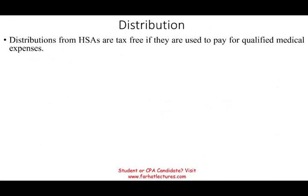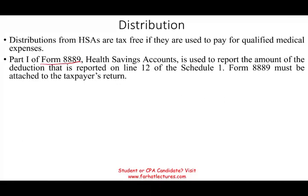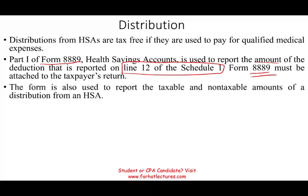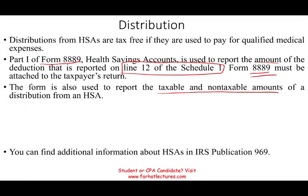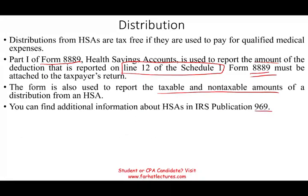Distributions from an HSA, as long as they are for qualified medical expenses, are tax-free. You have to fill out Form 8889, which has Part 1 and Part 2. It's used to report the amount of the deduction reported on Line 12 on Schedule 1 — as shown at the beginning — and that form must be attached to your tax return. This form is also used to report your taxable and non-taxable amounts from distributions. For more information, refer to IRS Publication 969 about HSA accounts.